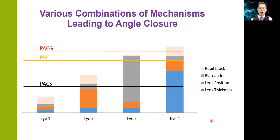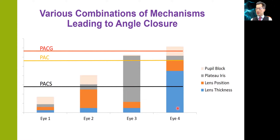This figure here tries to conceptualize the mechanisms leading to angle closure in different eyes. The x-axis shows four separate eyes, and the height of the column represents the anatomical predisposition to angle closure. The different colors represent the different mechanisms leading to angle closure. For example, for eye number three, plateau iris is the main contributing mechanism, whereas in eye number four, lens thickness is the main mechanism. The higher the column, the greater the risk of progression along the spectrum of angle closure disease.